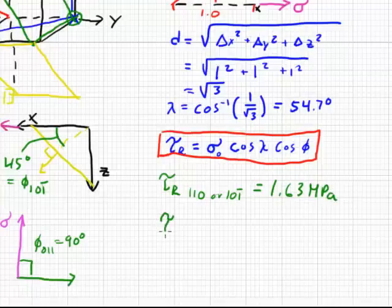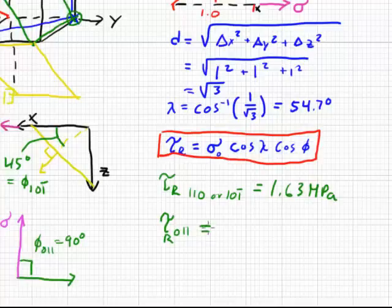Our resolved shear stress for the 0-1-1 plane. Because we have an angle of 90 degrees, the cosine of 90 degrees is 0. So our shear stress is 0. This is for part A.